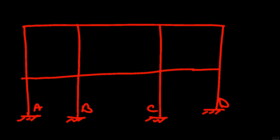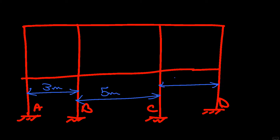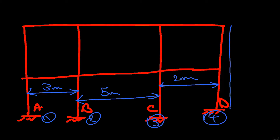Distance between the first and second point is 3 meters. Distance between the second and the third point is 5 meters. Distance between the third and the fourth point is 2 meters. Height of the first floor is 2.8 meters. Height of the second floor is 3 meters.